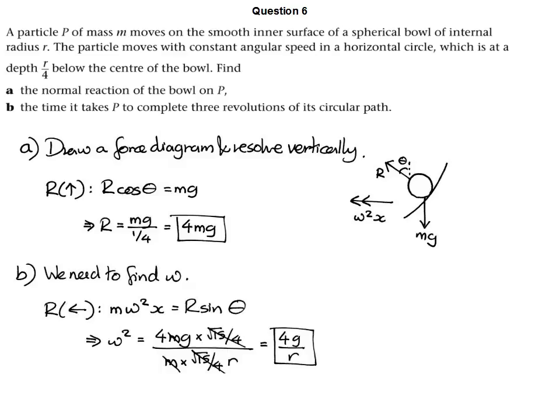For part b, we want to find what omega is. So the other sensible direction to resolve is towards the centre of the circle. If we do that, we find that, using Newton's second law, mass times acceleration equals the horizontal component of R. There's an awful lot of things we can plug in there, and it's worth making sure that you can see where all the numbers have come from. An awful lot cancels out, and we end up with omega squared being 4g over r. We can't get rid of the g and we can't get rid of r, so this is the best possible answer for omega squared — we can't simplify it any further.